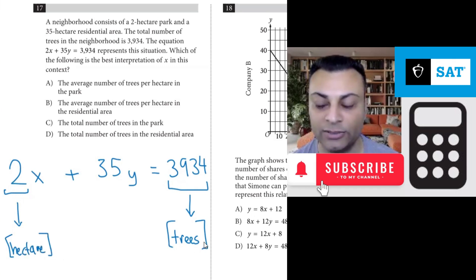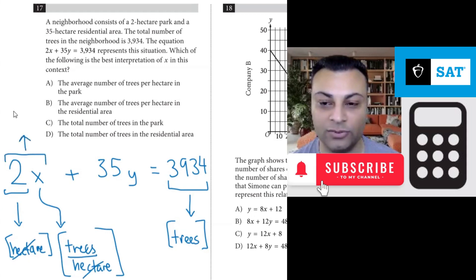2-hectare park. So this has a unit of hectares. Plural is not important - hectare, tree, trees, it doesn't matter. I could just use tree. So in order for the entire 2x to have a unit of trees, this x needs to have a unit of trees per hectare. Then you would have a cancellation, and the entire 2x would have a unit of trees.